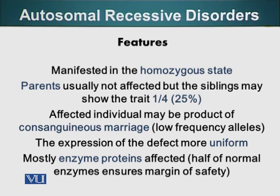Affected individuals may be the product of a consanguineous marriage. If a gene is rare in the population and a person is a carrier of that particular gene, the probability is very high that both copies of the defective gene come together. So that person is likely the product of a consanguineous marriage — two cousins or two close relatives marrying — which is one of the instances where two copies of this rare gene can come together in a single person.